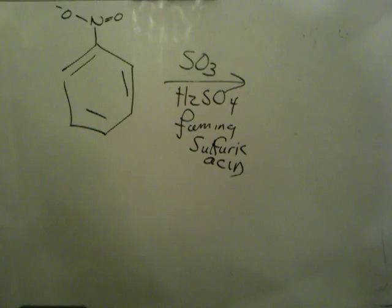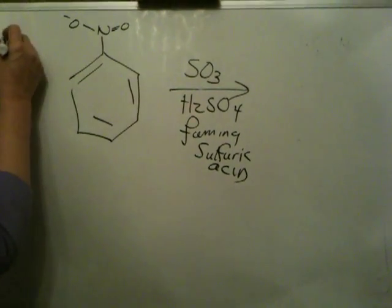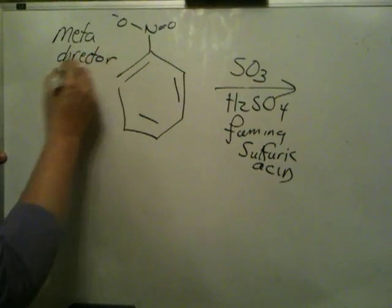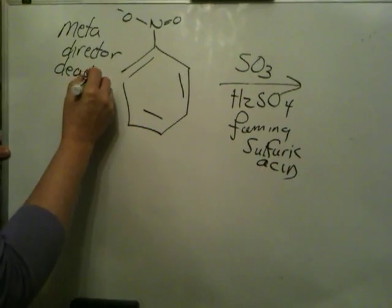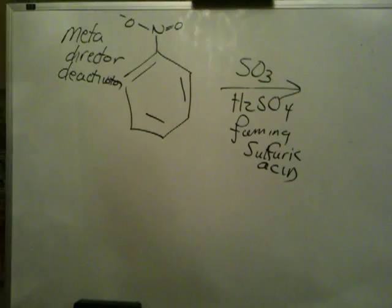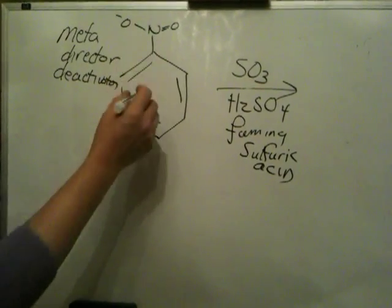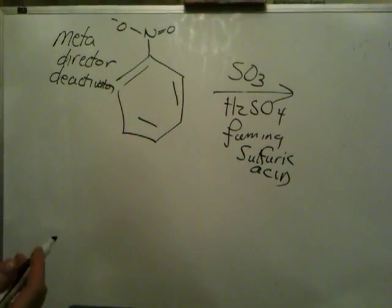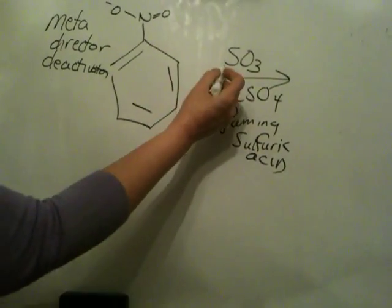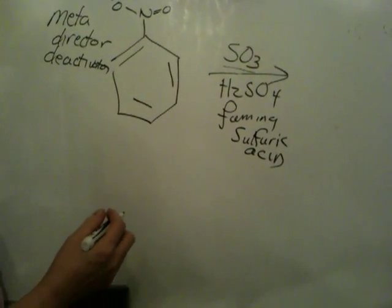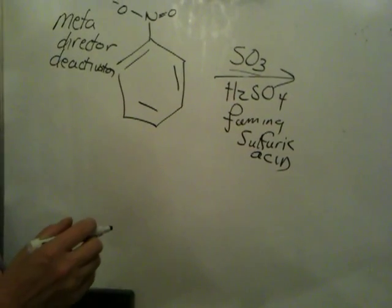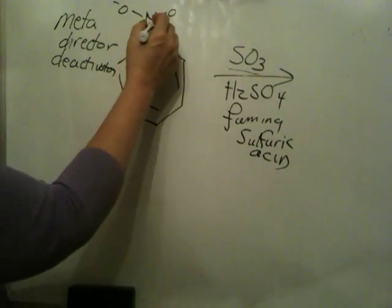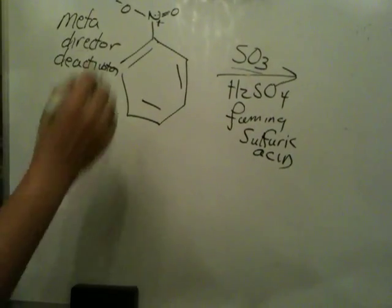What we want to consider are different modes of attack. This is a meta director and a deactivator. Generally what that means to be a deactivator is that the group attached is actually pulling density out of the ring, making the ring less electron rich and less attractive to electrophiles such as SO3.